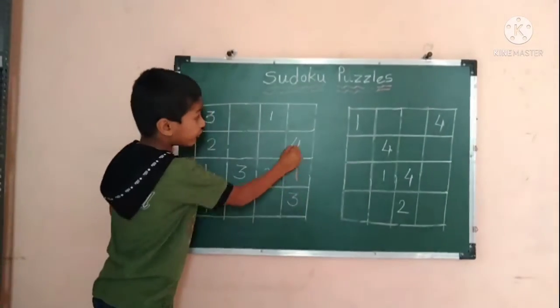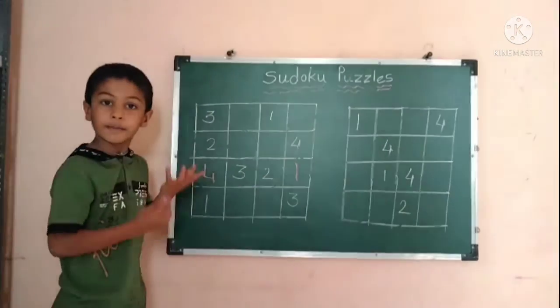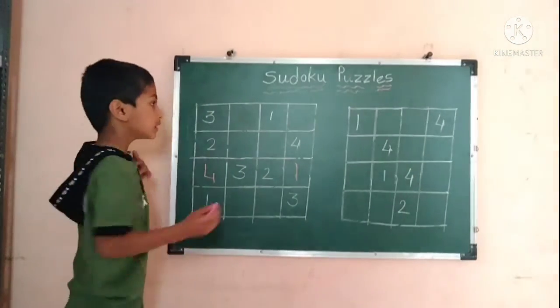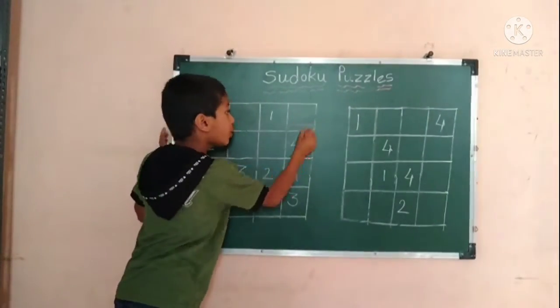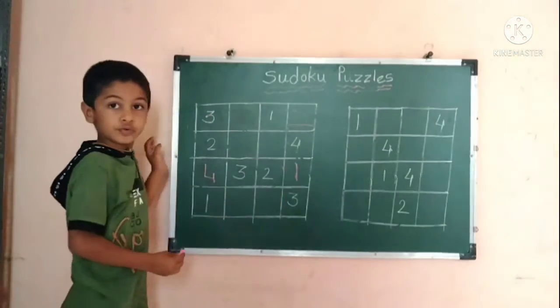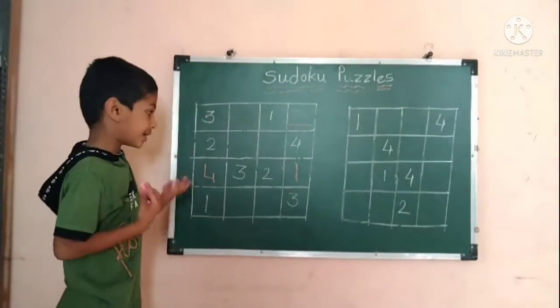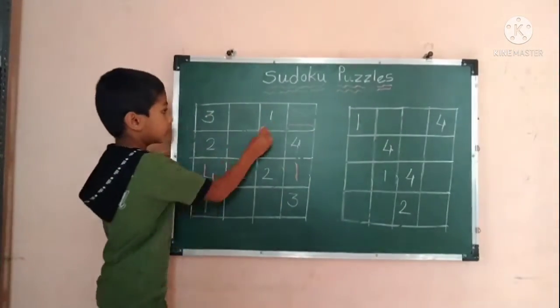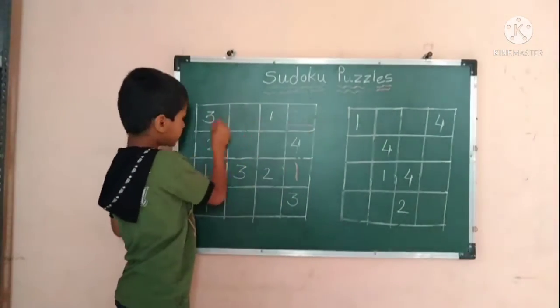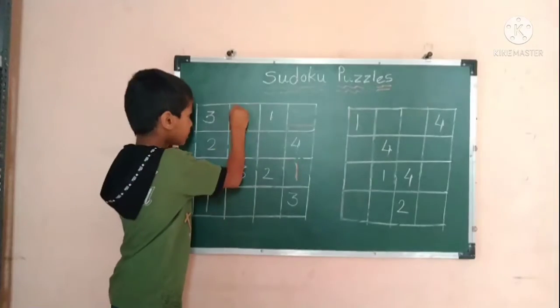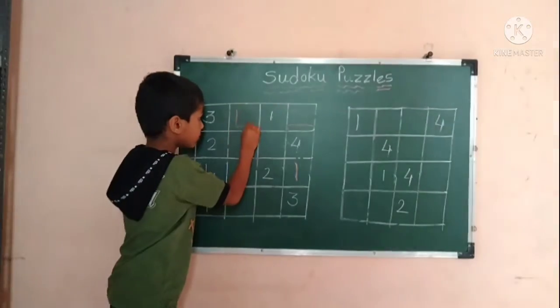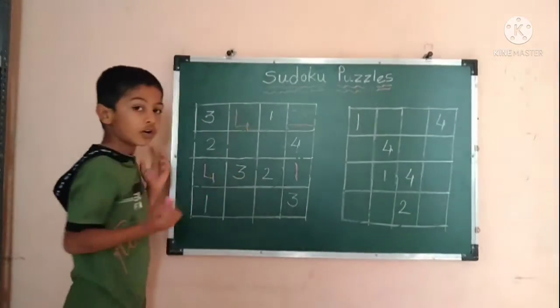One, three, four — which number is missing? Two. One, two, three — which number is missing? Four.